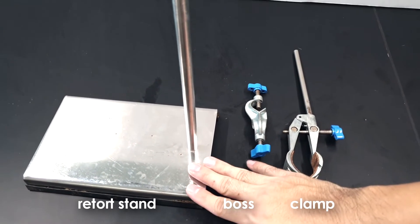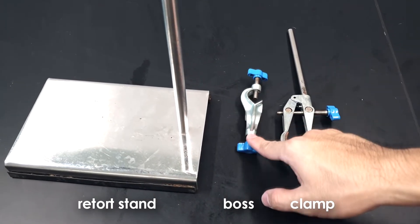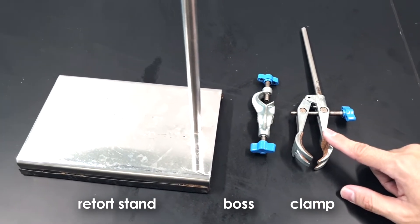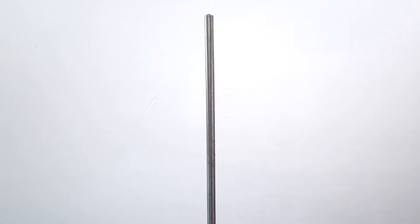There are three main components here, namely the retort stand, the boss, and the clamp. Place the retort stand on a table.